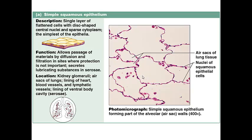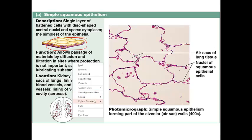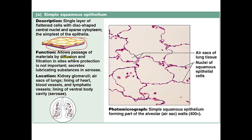Our first specific example is simple squamous epithelium, which almost looks like a tiled floor. The cells are going to be very thin, so it's going to be in a location where diffusion of materials can happen. One great example in the body is lining the lungs, where oxygen and carbon dioxide need to pass across this membrane. Another important function of simple squamous epithelium is filtration — the kidney glomeruli is where filtration occurs, and the air sacs are where diffusion occurs.